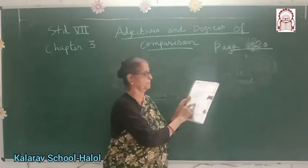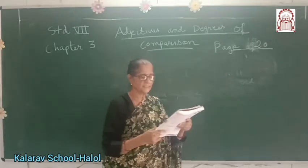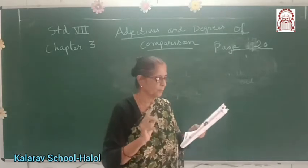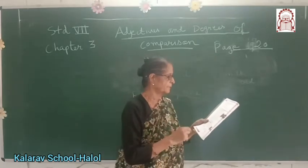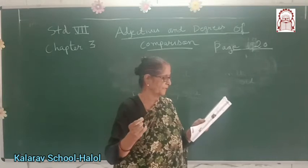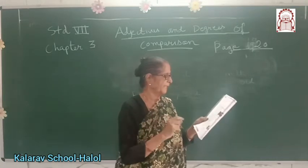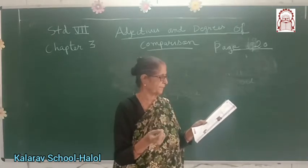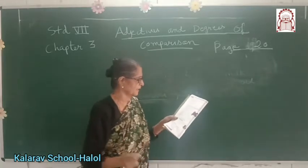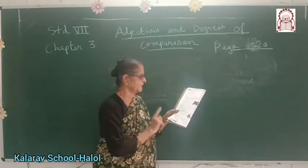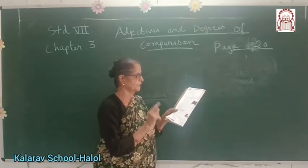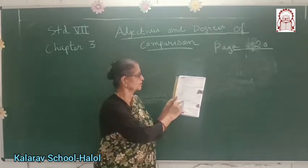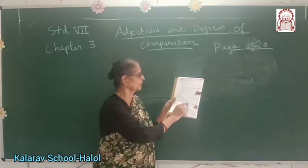Now number four — demonstrative adjectives. These adjectives point out which person or thing is meant. Example: these apples are rotten. They help in pointing out the thing or object meant. Demonstrative adjectives are this, that, these, those, such, and certain. They answer the question which one or which ones.